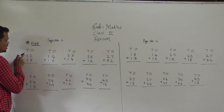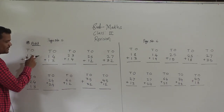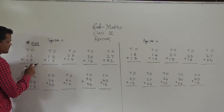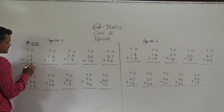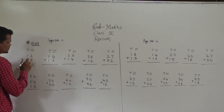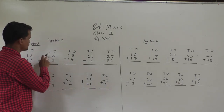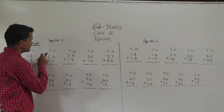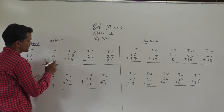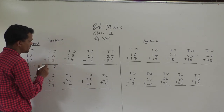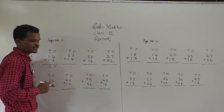First example: 12 plus 13. Start from the ones place and then add. 2 plus 3 is 5, 1 plus 1 is 2, so 25 is the answer. Next example: 14 plus 13. 4 plus 3 is 7, 1 plus 1 is 2, so 27 is the answer.